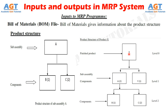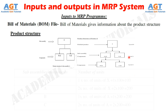Now let's see the product structure of product X. To make the finished product X, the sub-assembly requires two components of A and one component of Y. Again, at level two, sub-assembly A is made of one component of B and two C components. If 100 units of product X are to be manufactured, each finished product requires one component of Y, so 1 × 100 = 100 components of Y are needed.